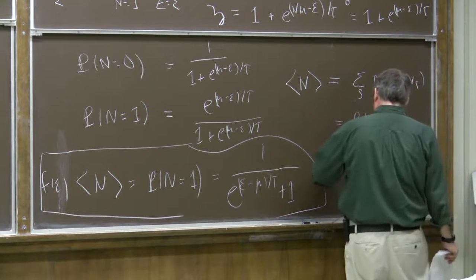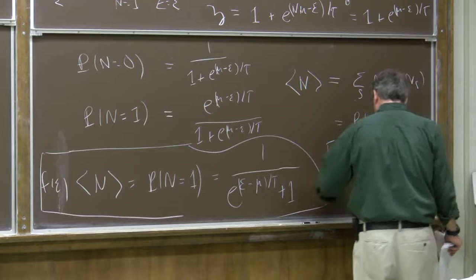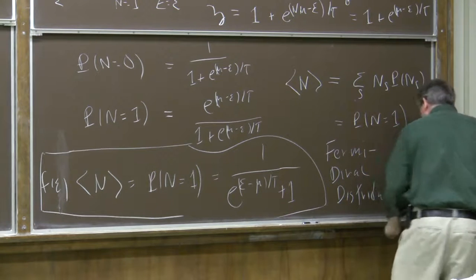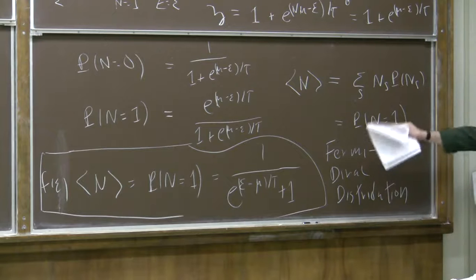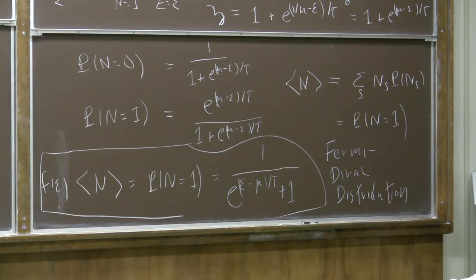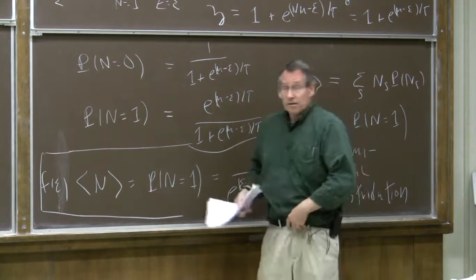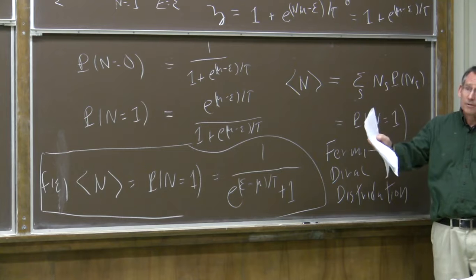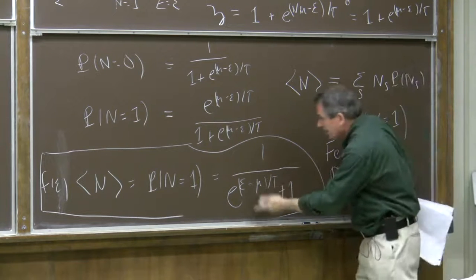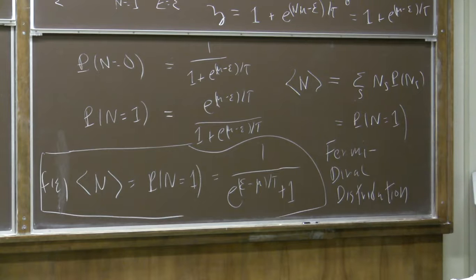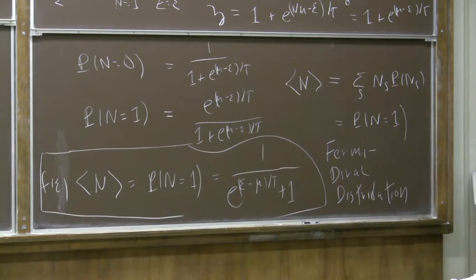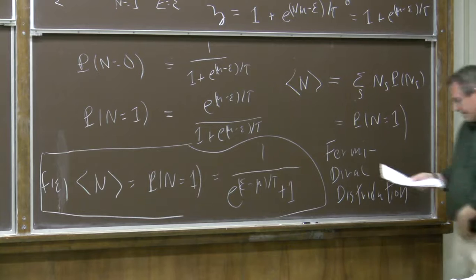It's called a distribution because we'll have many orbitals, and this tells us how the total particle number is distributed among them. The chemical potential is fixed and the same for all orbitals. As the energy of the orbital varies, the mean occupation number depends on energy as described by the Fermi-Dirac distribution. When energy equals the chemical potential, the mean occupation is 1/2 (half-occupancy).